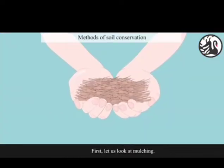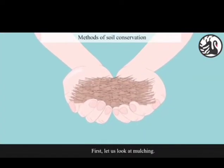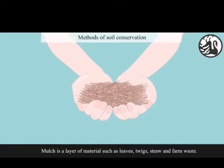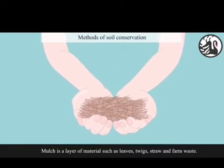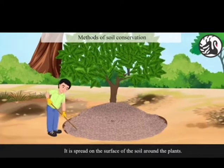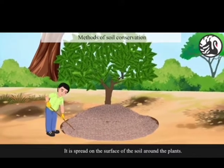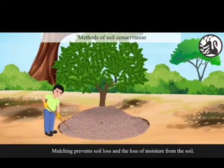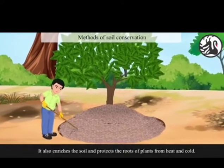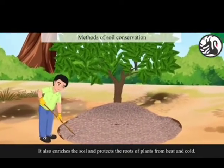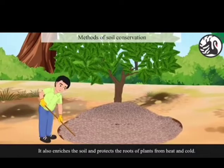First, let us look at mulching. Mulching is a layer of material such as leaves, twigs, straw and farm waste. It is spread on the surface of the soil around the plants. Mulching prevents soil loss and the loss of moisture from the soil. It also enriches the soil and protects the roots of plants from heat and cold.